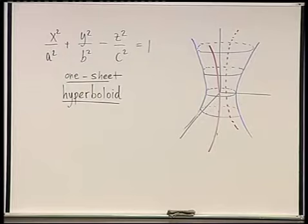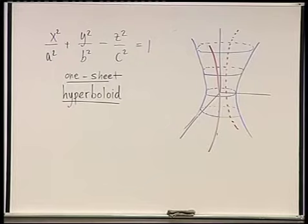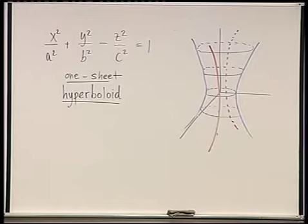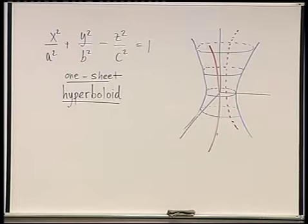What happens when you plug in z = 0? There's no solution — it would have to equal −1, so this surface does not have any life on the xy plane. As long as |z| < c there's going to be no solution. When z = ±c, the z²/c² term becomes 1, which moves to give x²/a² + y²/b² = 0.